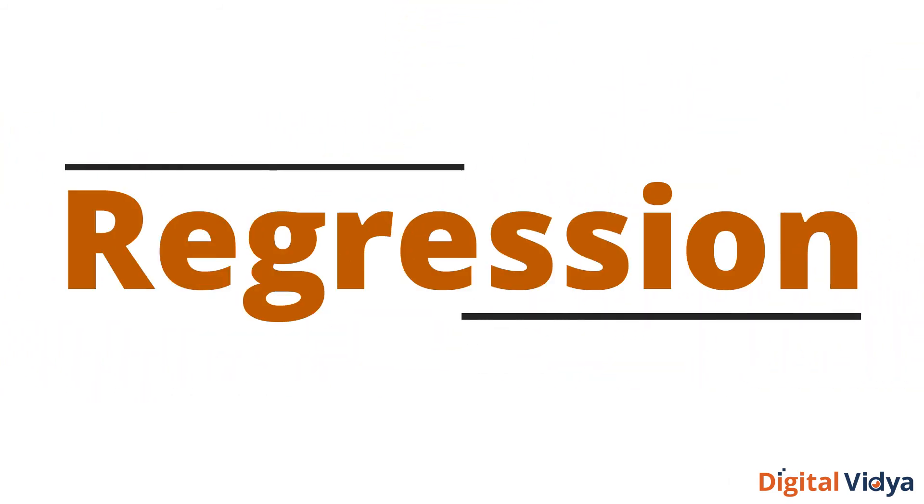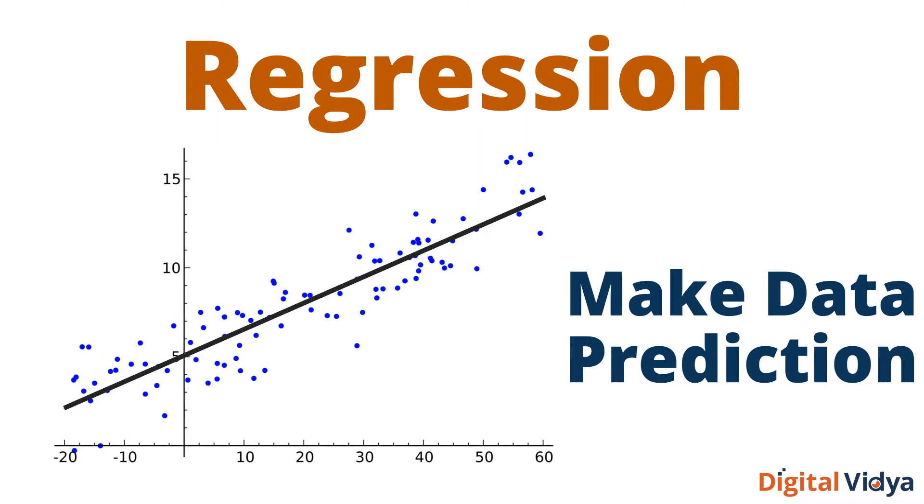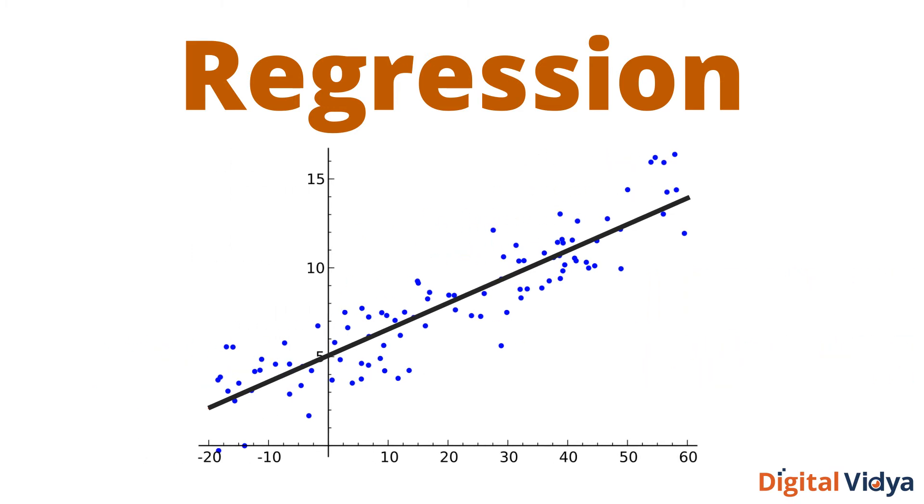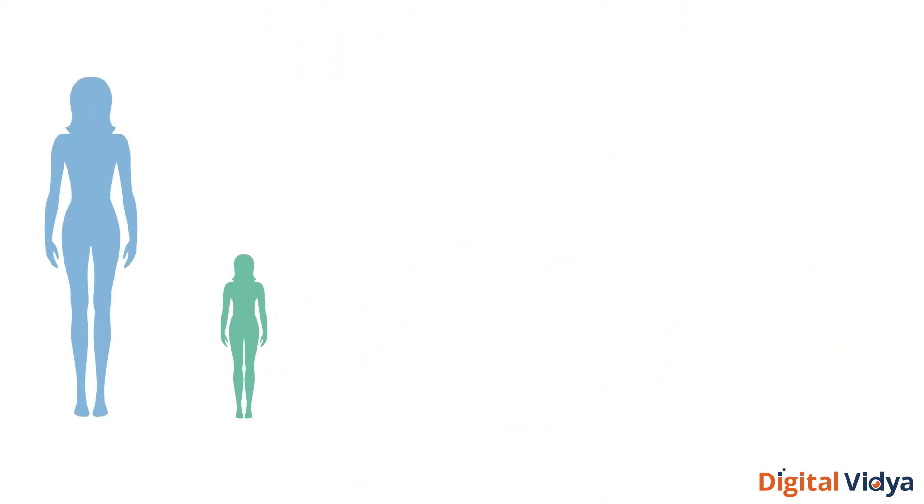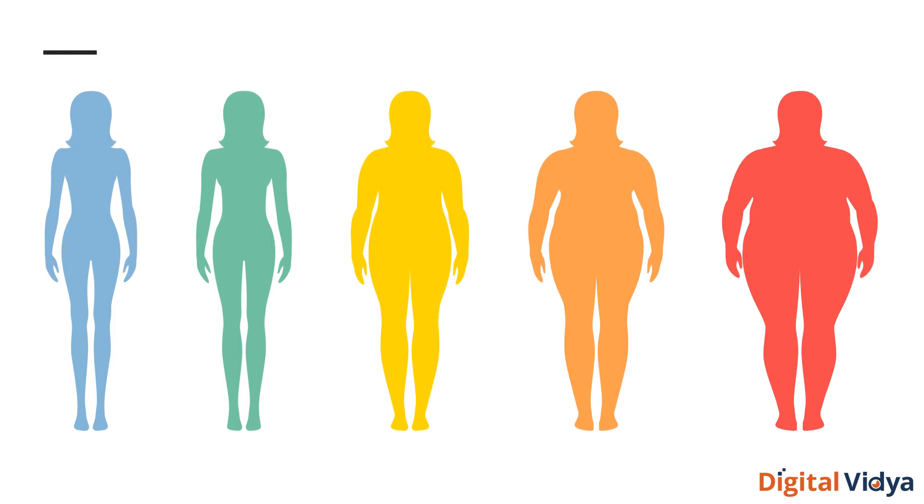Moving on to regression. It is used in statistics to find trends in data and allow people to make predictions about your data by providing an equation for a graph. For example, if you've been putting on weight over the last few years, it can predict how much you'll weigh in 10 years' time if you continue to put on weight at the same rate.